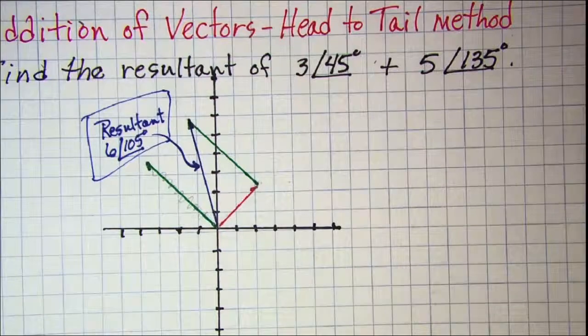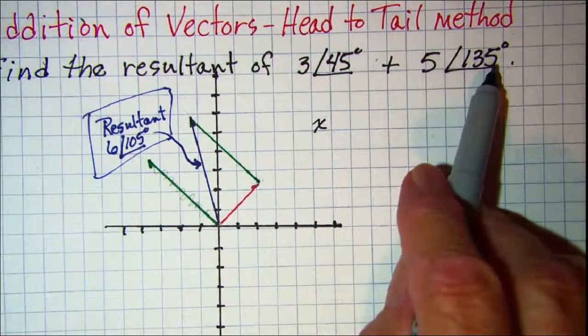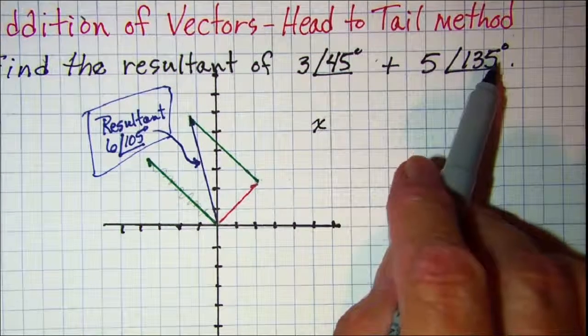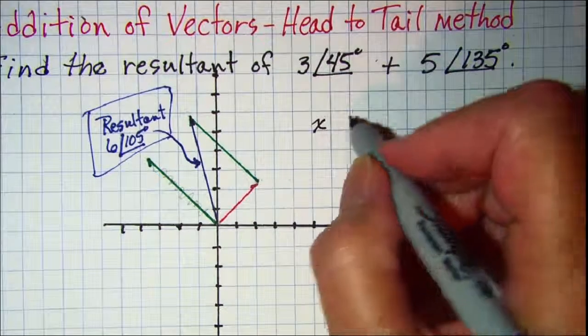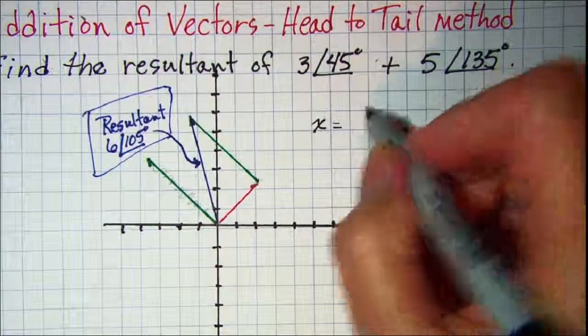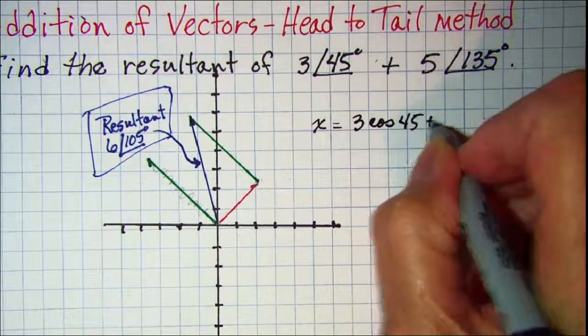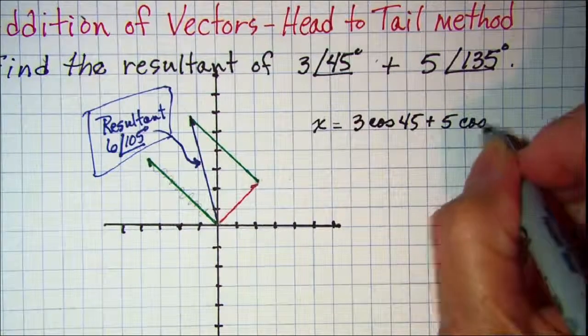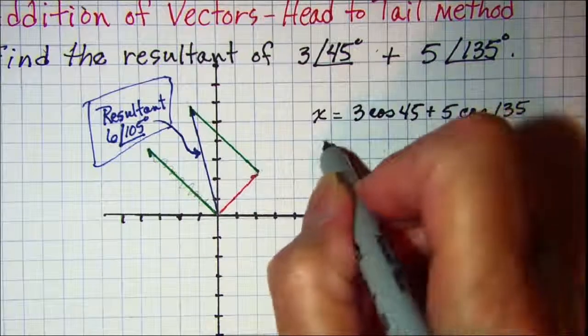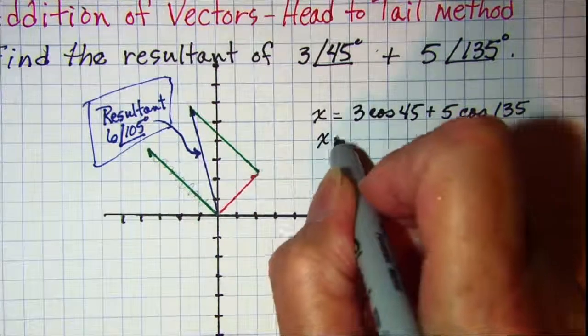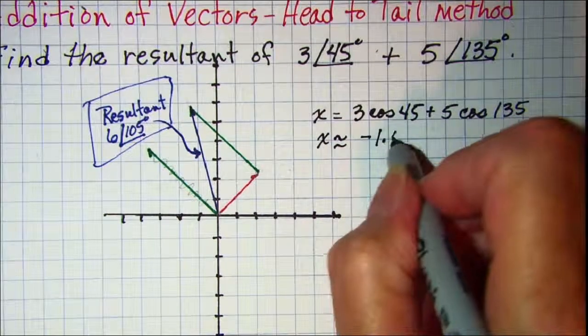Our x value, we need to change these two to rectangular coordinates and then add them together. So our x value of the resultant in rectangular form will be 3 times the cosine of 45 plus 5 times the cosine of 135. So my x value of my resultant is going to be approximately negative 1.414.